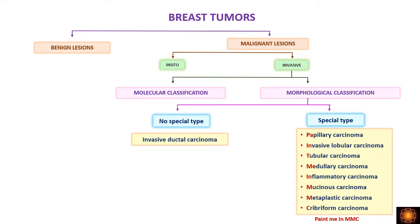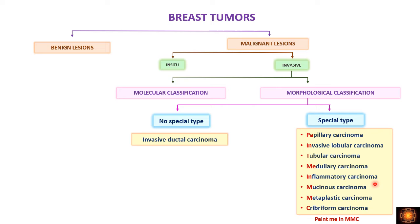Before going into morphology, just a brief recap: invasive carcinomas are classified into two types — molecular classification and morphologic classification. The molecular classification includes luminal A, luminal B, HER2-rich, and basal type (triple negative). The morphological classification is broadly divided into no special type and special type, with invasive breast carcinoma ductal no special type, plus papillary, lobular, tubular, medullary, inflammatory, mucinous, metaplastic, cribriform carcinomas and other rare variants.